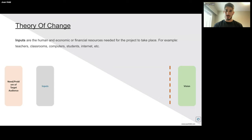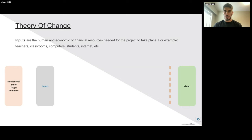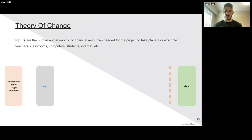Next, we can start with inputs — what are the things we need to accomplish our vision, guided by our mission? Inputs are all the human, economic, and financial resources needed for the project or organization to exist and take place. For example, let's say we have a program that involves schools: we need teachers, classrooms, computers, students, and internet access. These are the basic things we need so that our project can even start.